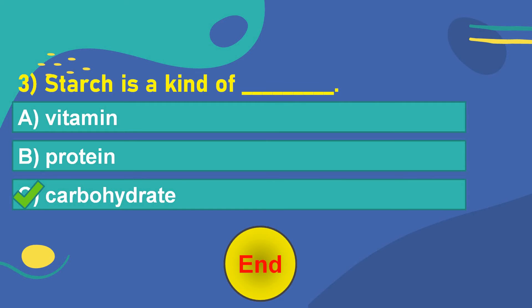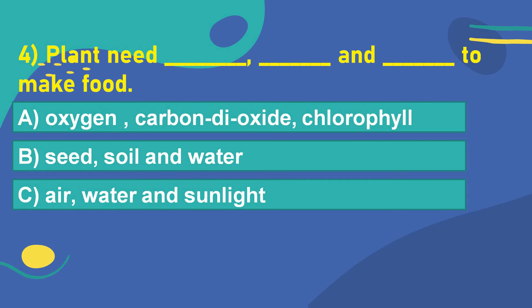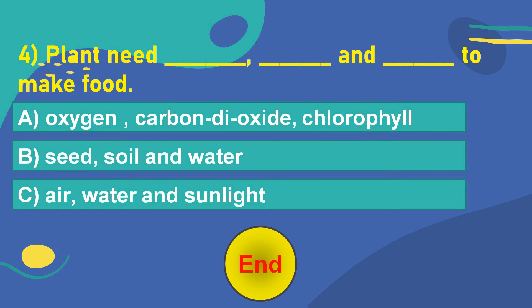Let's move on to the next question. The fourth question is: Plants need dash, dash and dash to make food. Option A: Oxygen, carbon dioxide, chlorophyll. Option B: Seed, soil and water. Option C: Air, water and sunlight. Think of the answer. Your time starts now. 5, 4, 3, 2, 1, 0. OK. The correct answer is Option C: Air, water and sunlight.